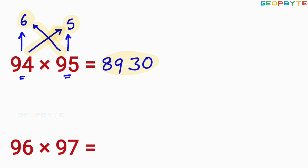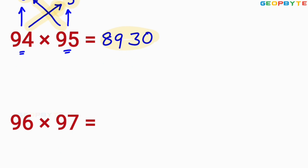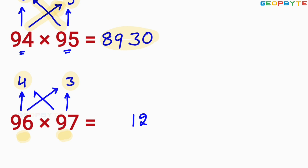Similarly, let us take the last multiplication for this case: 97 into 96. This 96 is less than 100 by 4. 97 is also less than 100 by 3. You multiply 4 and 3. What is 4 into 3? 12. Write that 12. Then you write 96 minus 3 or 97 minus 4. 96 minus 3 equal to 93, and 97 minus 4 also equal to 93. You write that 93 here for getting the answer. Therefore, 9312 is the value of 96 into 97.